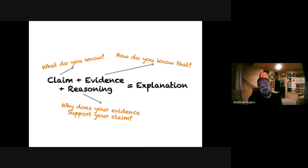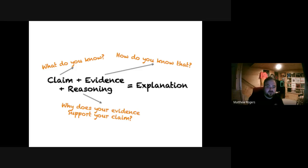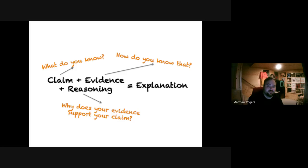Another way to look at CER is with this equation: claim plus evidence plus reasoning equals your explanation. It breaks down what each section is. Claim is what do you know? Evidence is how do you know that? And reasoning is how does your evidence support your claim?